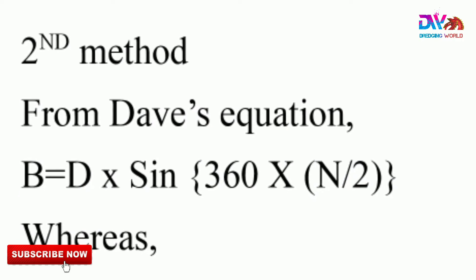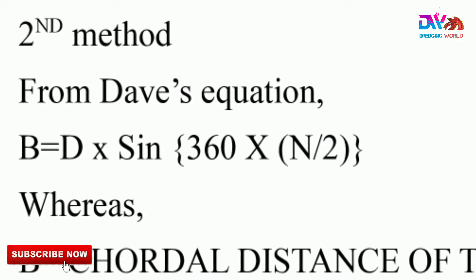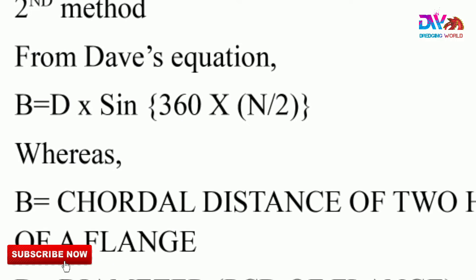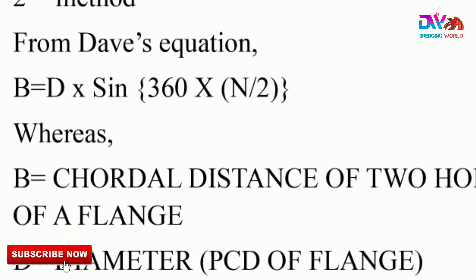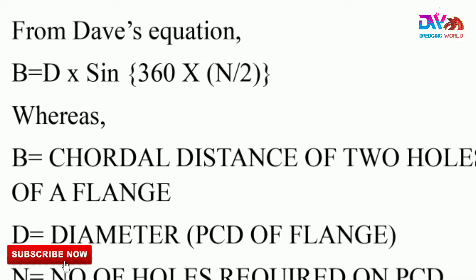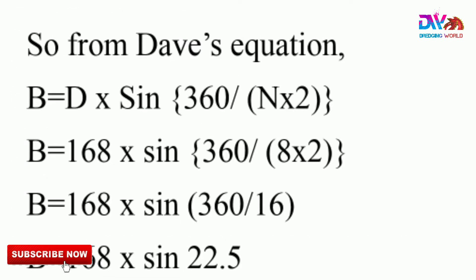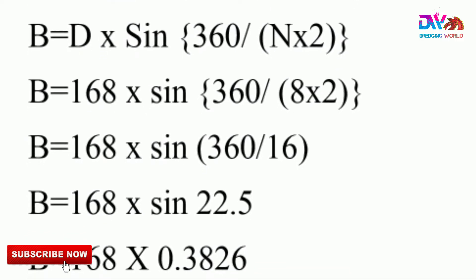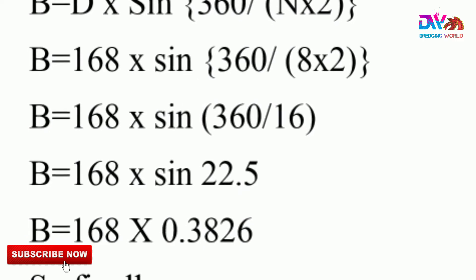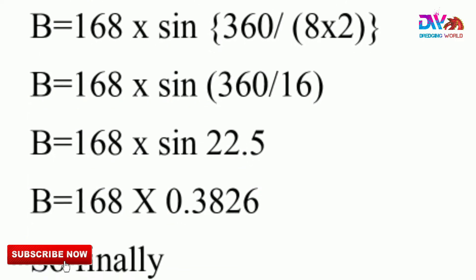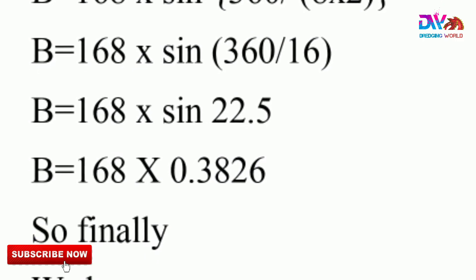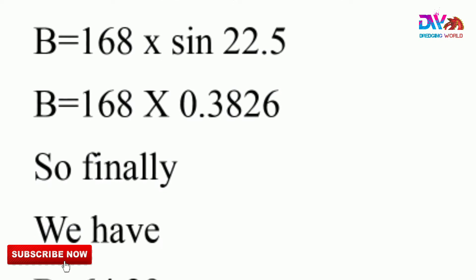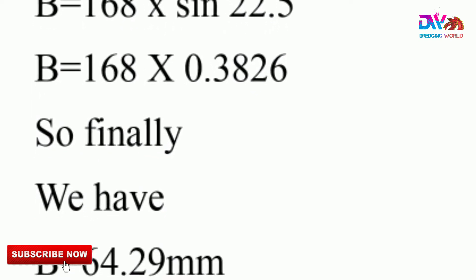The second method uses Dev's equation: B = D × sin(360/n ÷ 2), where B is the chord distance between 2 holes, D is the PCD of the flange, and n is the number of holes. Using Dev's equation: B = 168 × sin(360/8 ÷ 2) = 168 × sin(22.5°) = 168 × 0.38268 = 64.29mm.